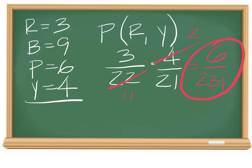Yeah, this would not be completely reduced because you can take a 3 out of this and this, so that would be 2 over 77 for the final answer. This one is right.